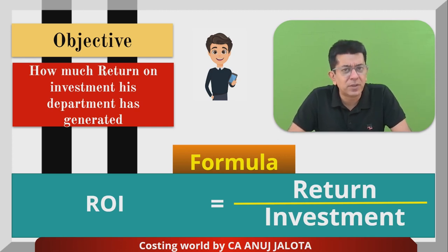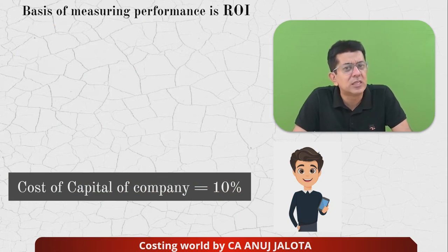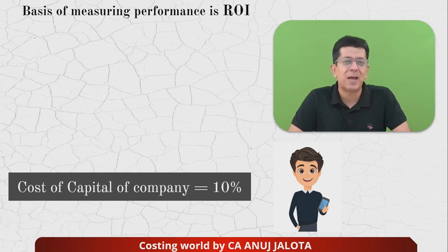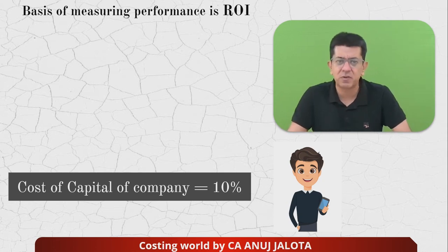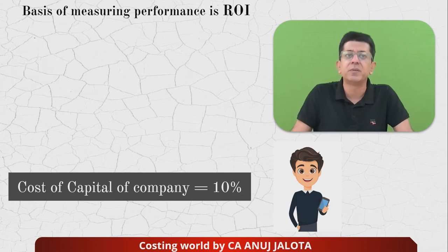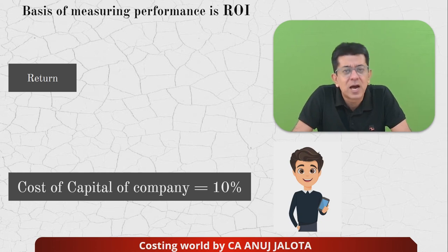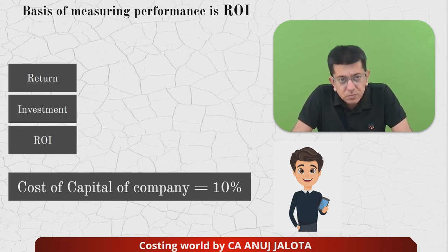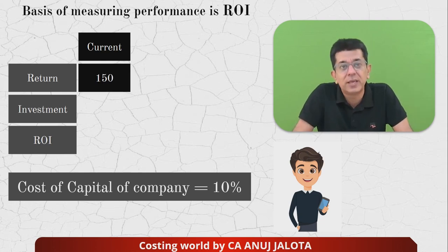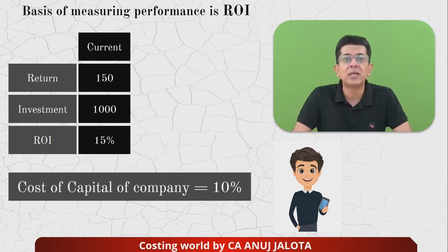Let's see a practical example of what happens when a manager is evaluated based on ROI. One piece of information not relevant to this MCQ but useful for others: the cost of capital of the company is 10%. Currently, Division A has a return of 150 and investment of 1000, so the current ROI is 150 divided by 1000 — that's 15%.